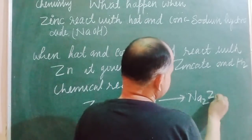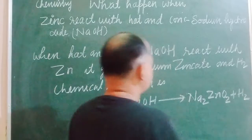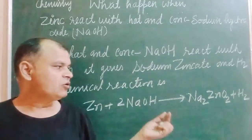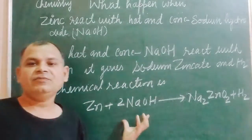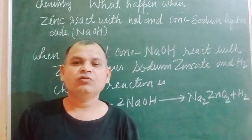ZnO2 plus H2. So Na2ZnO2 plus H2. This is the chemical reaction when zinc reacts with hot and concentrated sodium hydroxide.